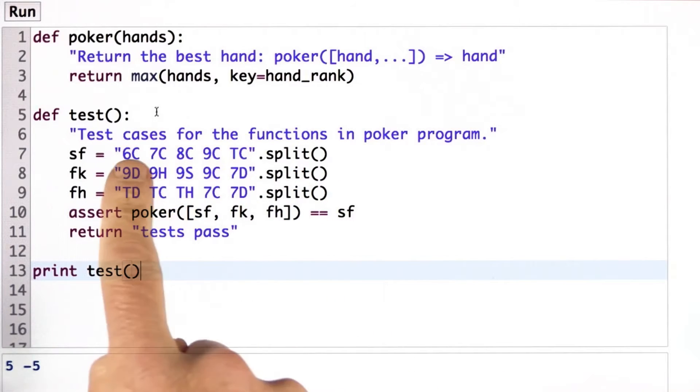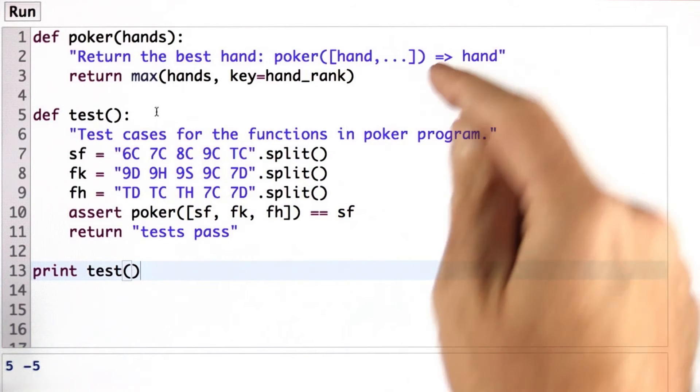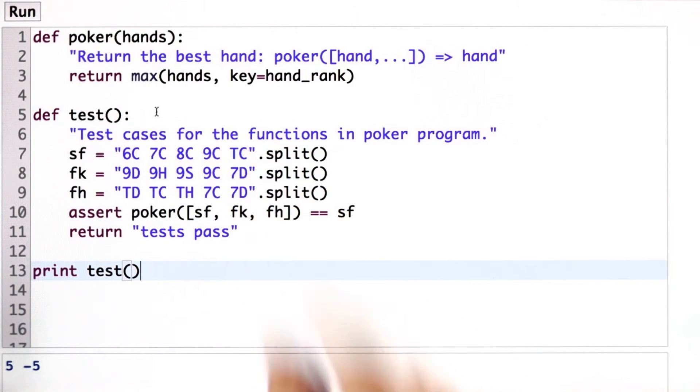I've defined those by taking this string and splitting it on the spaces, which gives me a list of five cards for each of these three hands. Then I've asserted that when we play poker between these three hands, the winning hand is the straight flush.